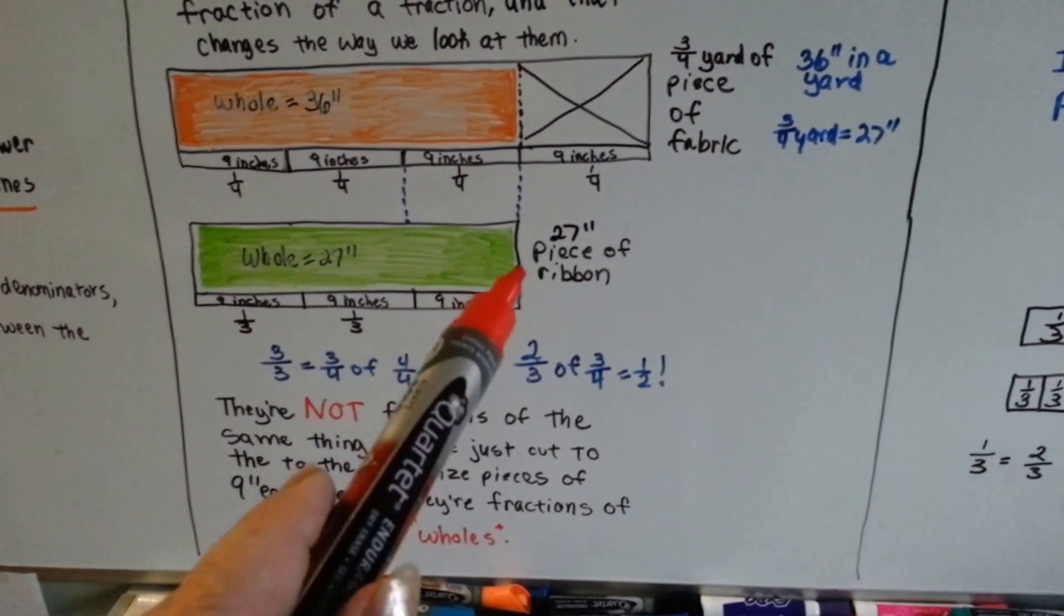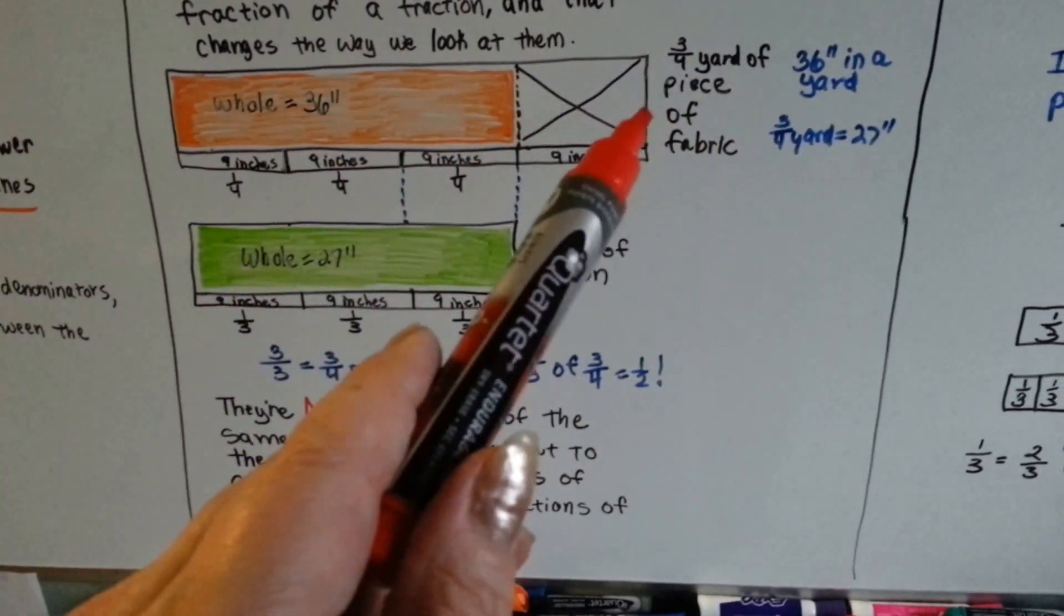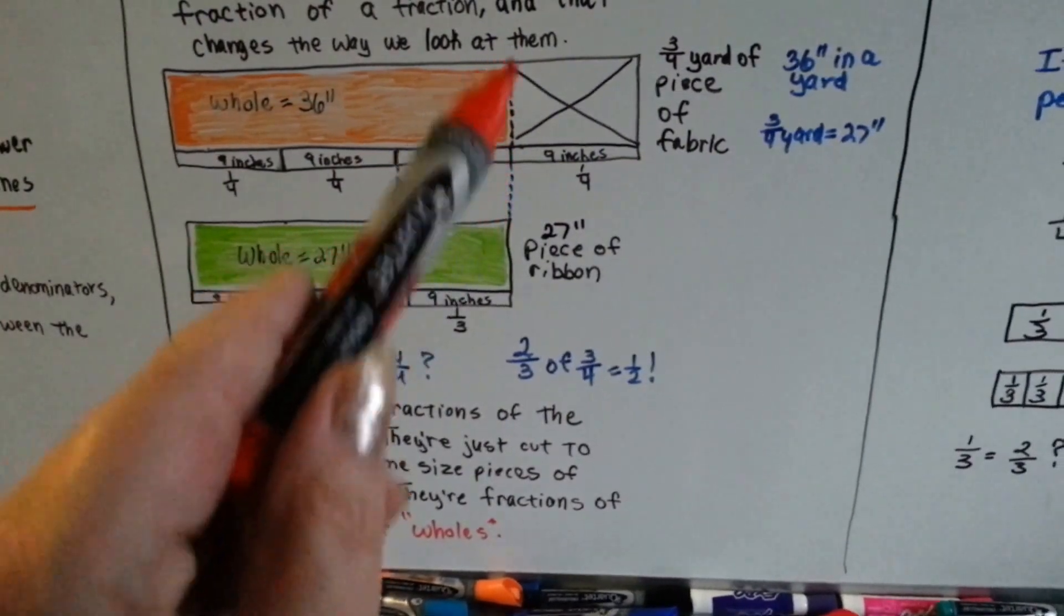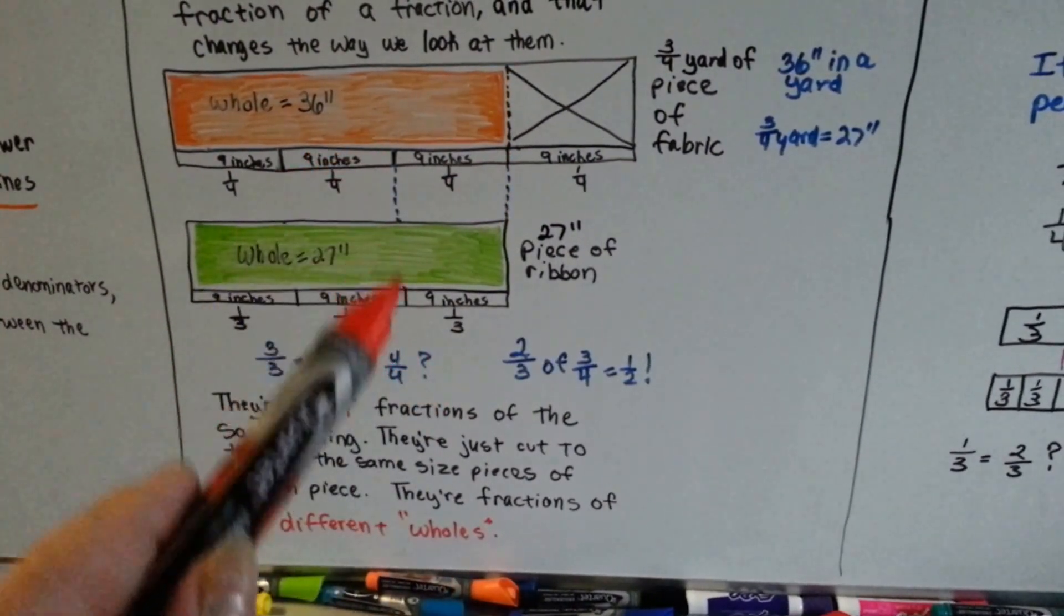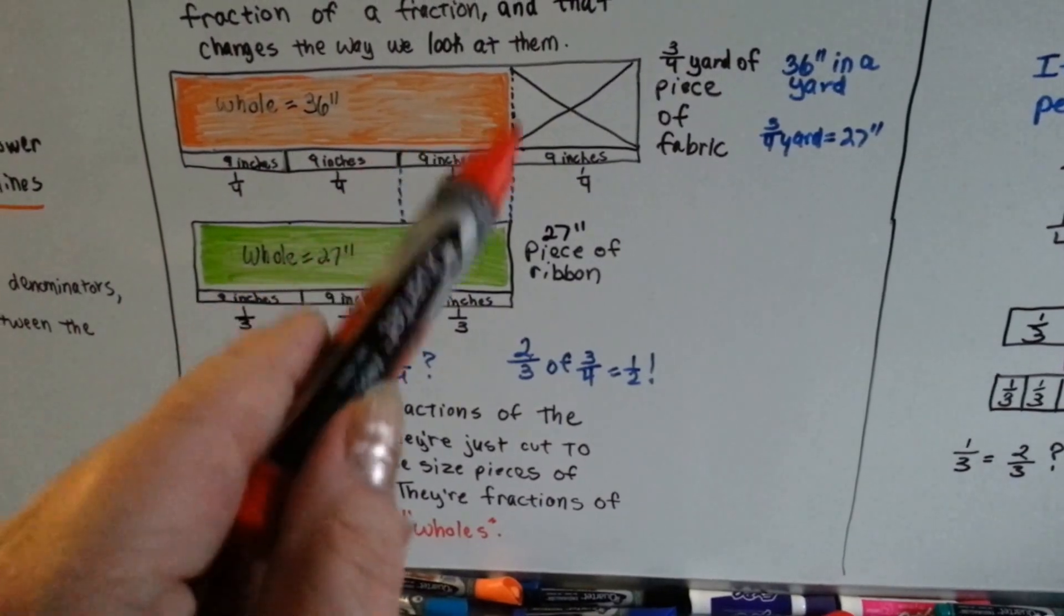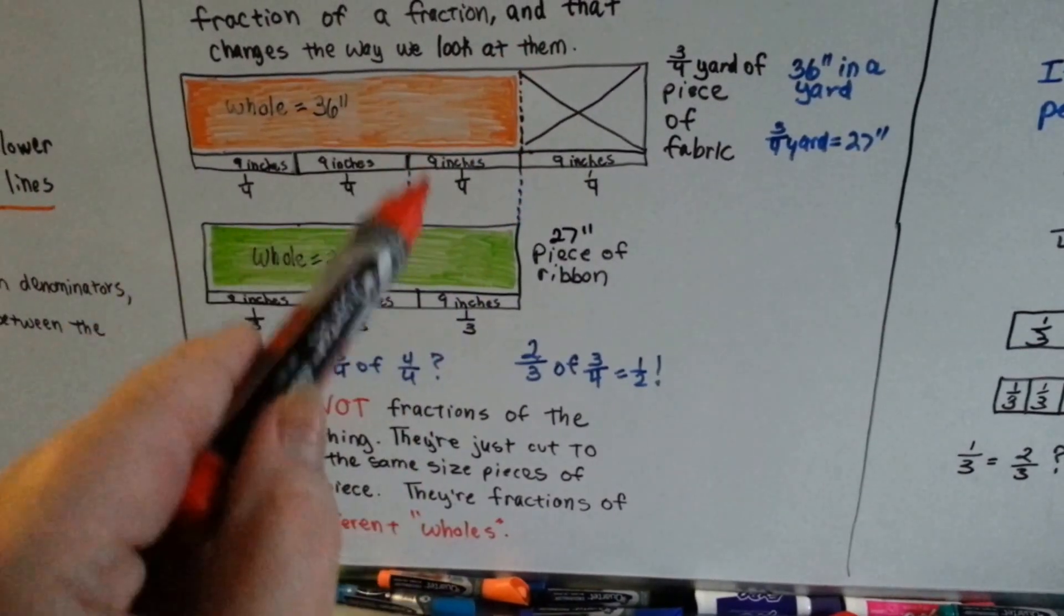The whole of this is 27 inches. The whole of this is 36 inches. We just happen to only have three-fourths of it. So, actually, two-thirds of three-fourths can be half.